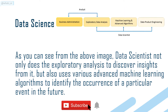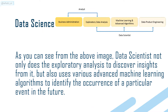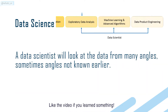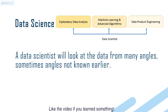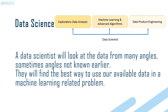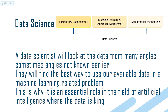As you can see from the above image, a data scientist not only does the exploratory analysis to discover insights from it, but also uses various advanced machine learning algorithms to identify the occurrence of a particular event in the future. A data scientist will look at the data from many angles, sometimes angles not known earlier, and will find the best way to use available data in a machine learning related problem. This is why it is an essential role in the field of artificial intelligence, where the data is king.